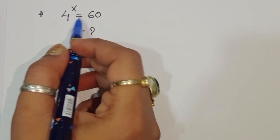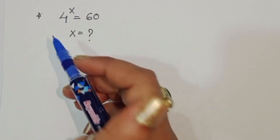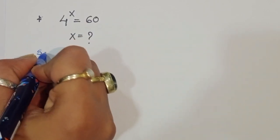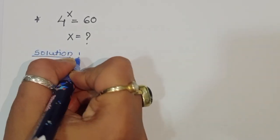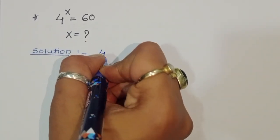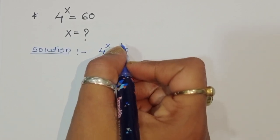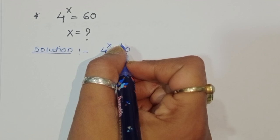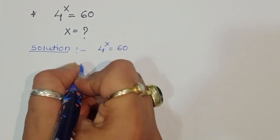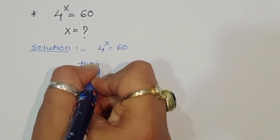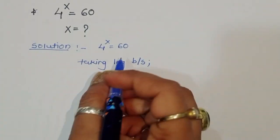The question is: given 4 power x is equal to 60, we have to find the value of x. To find x, we take log on both sides.